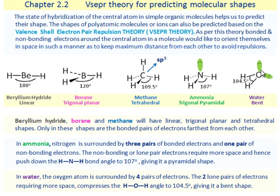In water, the oxygen atom is surrounded by four pairs of electrons. The two lone pairs of electrons requiring more space compress the H-O-H bond angle to 104.5 degrees, giving it a bent shape.